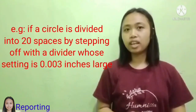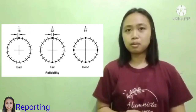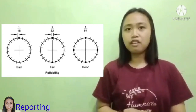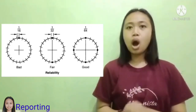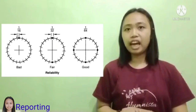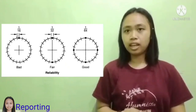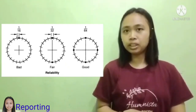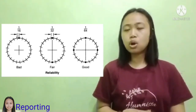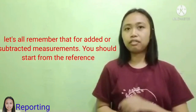For example, if a circle is divided into 20 spaces by stepping off with dividers whose setting is 0.003 inches large: for excellent reliability, begun from one point, the error is 1/16; for fair reliability, begun from opposite sides, the error is 1/32; and for good reliability, begun at four quadrants, the error is reduced to 1/64.